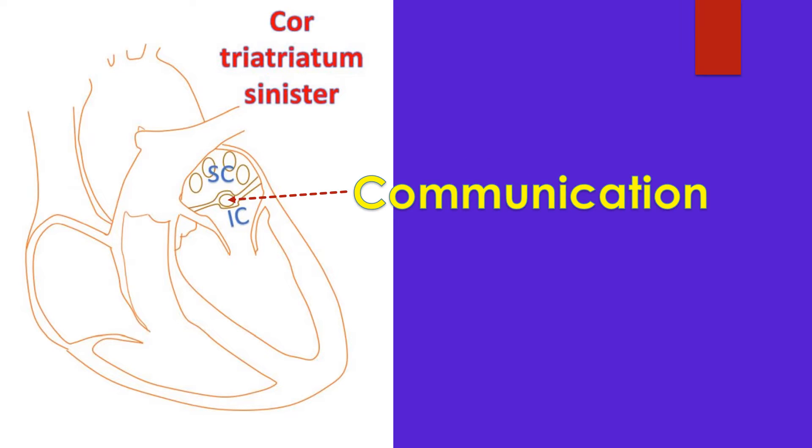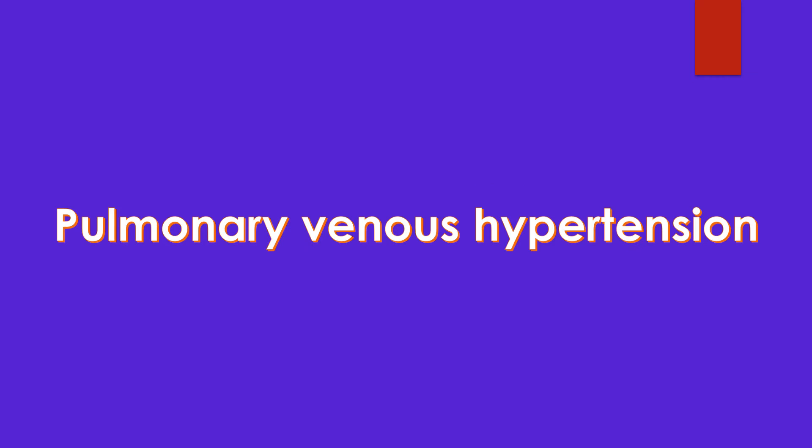The size and number of communications between the upper and lower chambers are variable. Sometimes the accessory chamber may connect with the right atrium. Symptoms depend on whether the connection between the two chambers is obstructive or not. If it is obstructive, symptoms are likely due to pulmonary venous hypertension. Symptoms could also be due to other associated cardiac malformations.